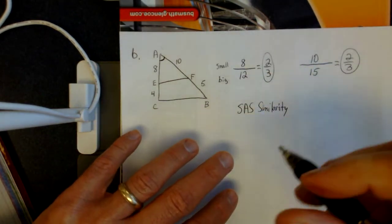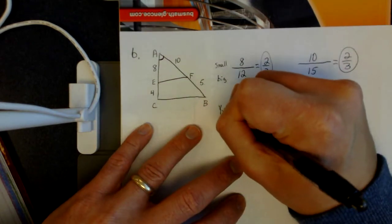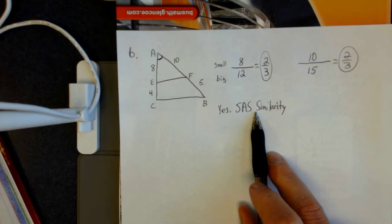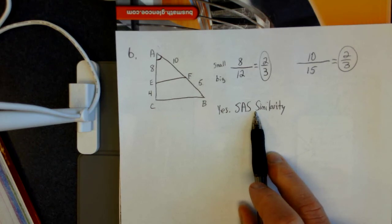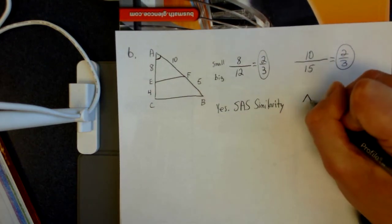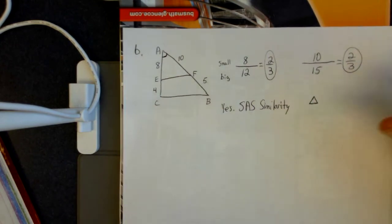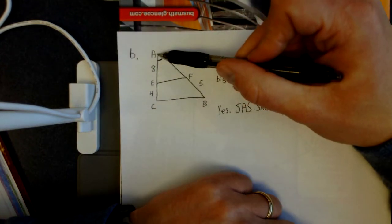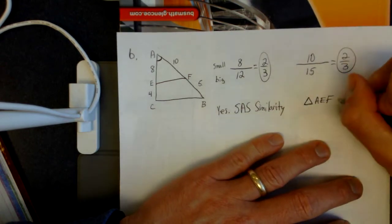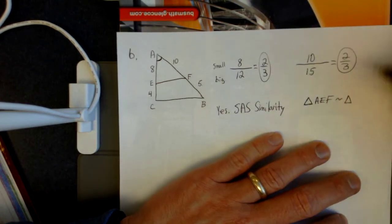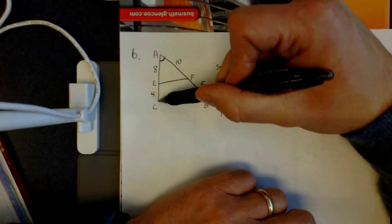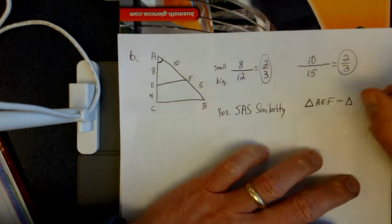Yes, they are similar by side-angle-side similarity. For the similarity statement, I'll call the top triangle AEF, and the big triangle — going in the same order, top to bottom to right — is ACB. So triangle AEF is similar to triangle ACB.